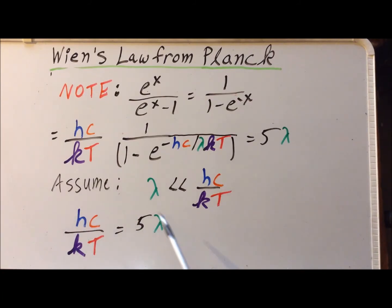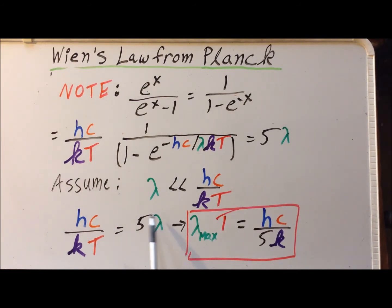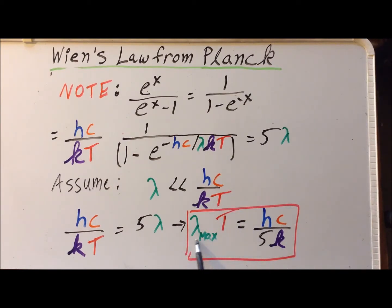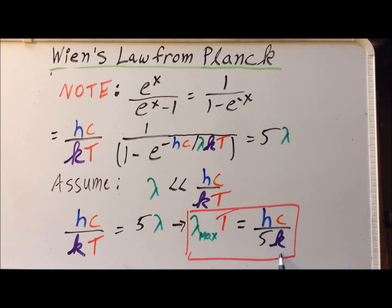With that term going to one, we get that Hc over kT is equal to five times lambda. Rearranging, this lambda is lambda max, so lambda max times T equals Hc over five times k, confirming that lambda max times T equals a constant — the general principle of Wien's displacement law. More specifically, we now recognize that the c2 constant in Wien's displacement law is simply Hc divided by k, and we can see exactly where the one-fifth factor in the law came from.